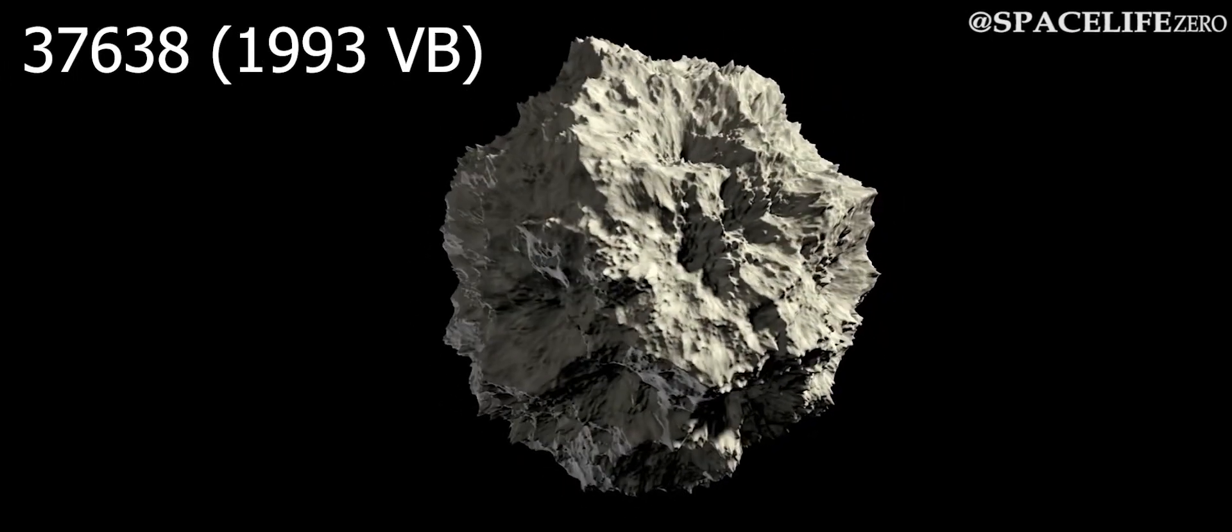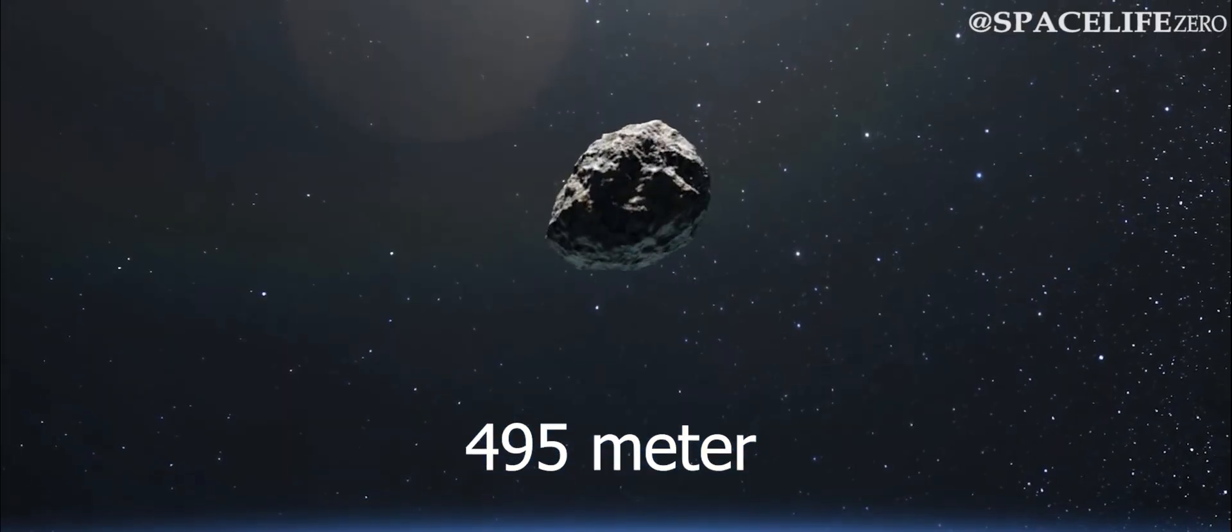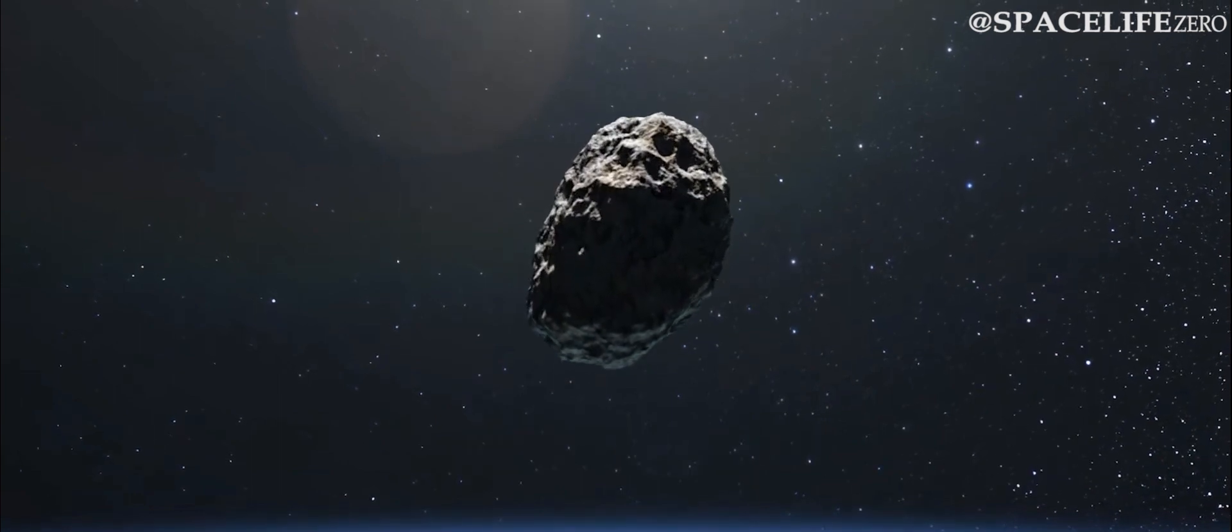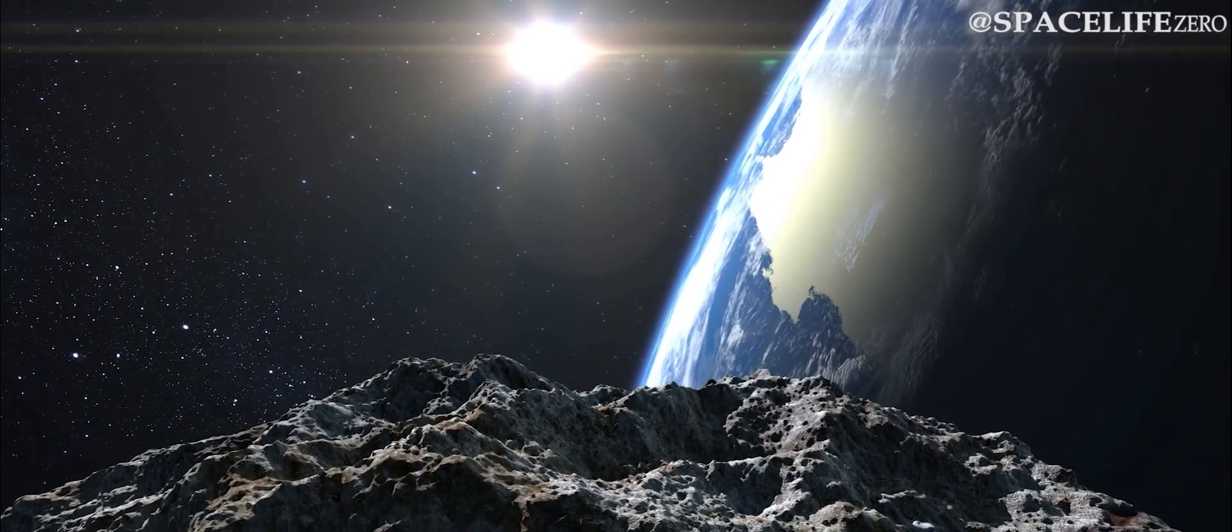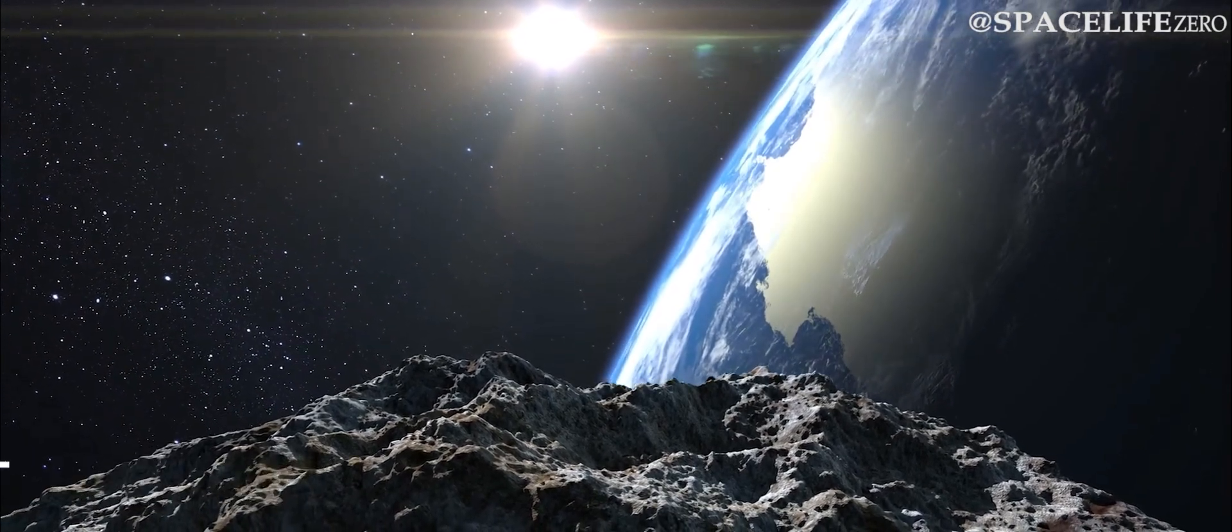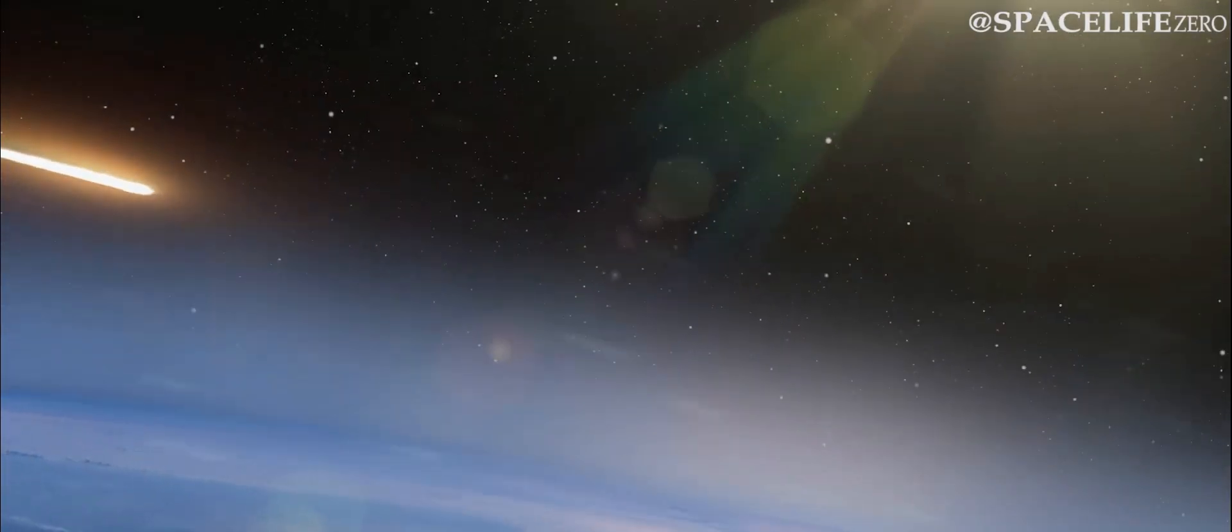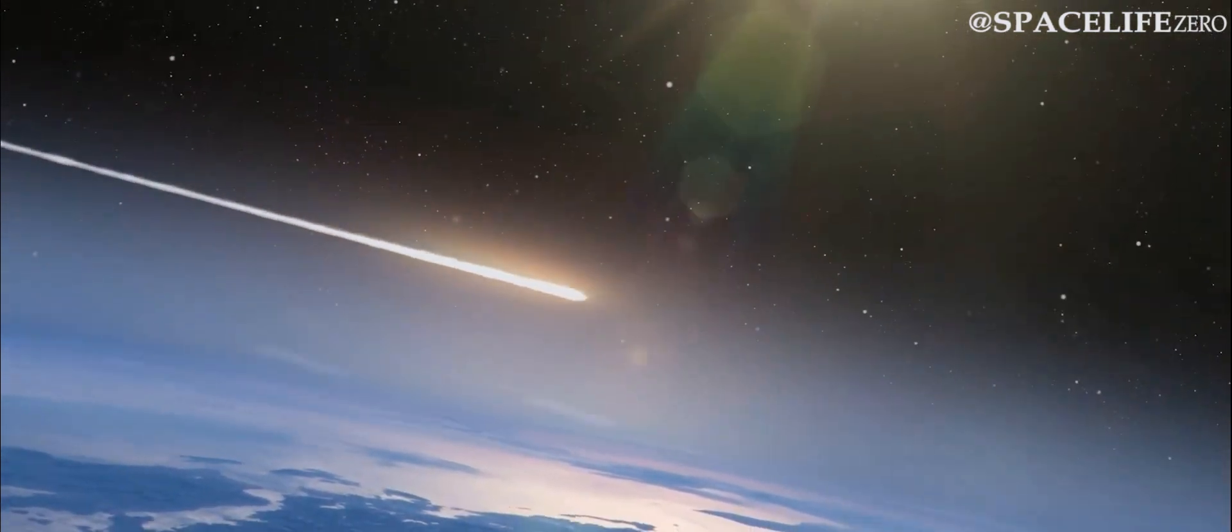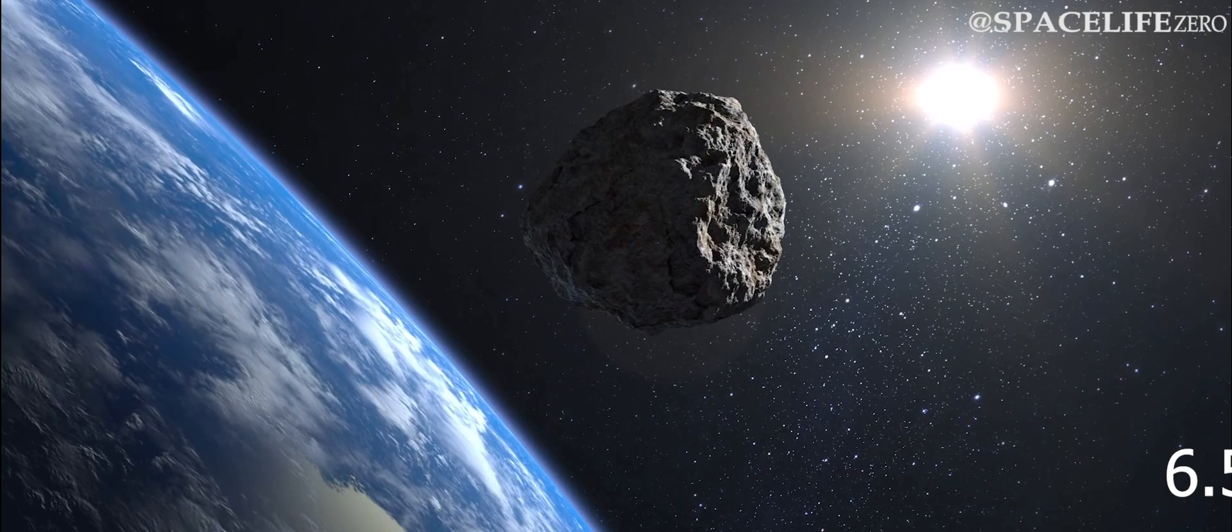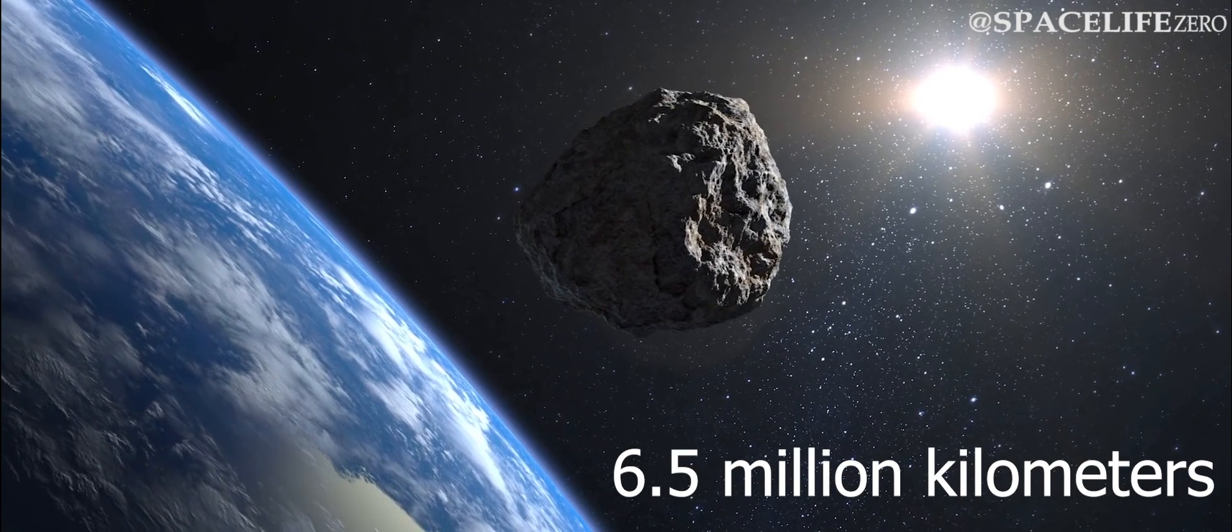Asteroid 1993 VB. This 495-meter huge space rock will come close to Earth on February 21, at 1856 GMT. Rushing at a mind-numbing speed of 39,850 km per hour, it will make its closest approach to Earth at a distance of 6.5 million kilometers.